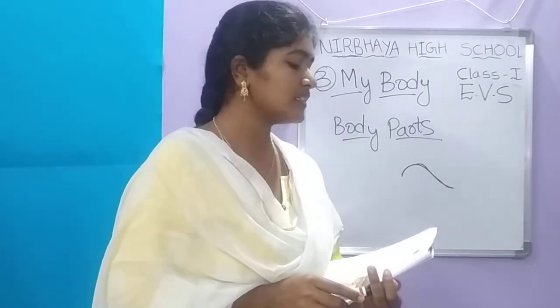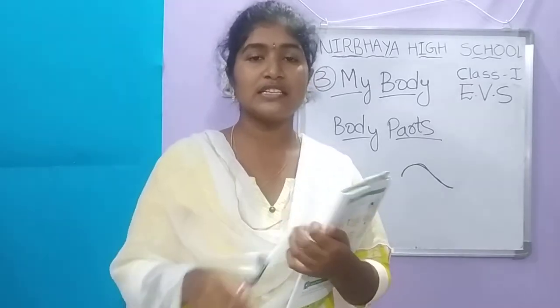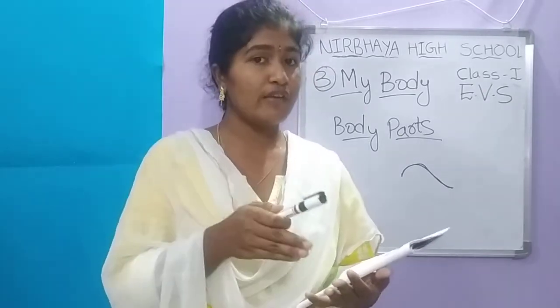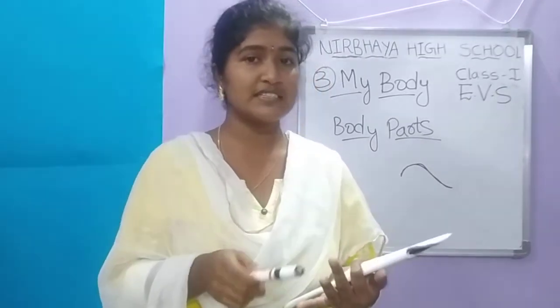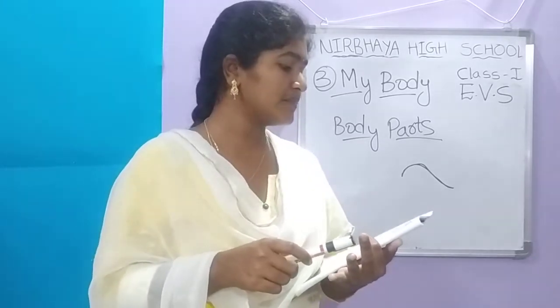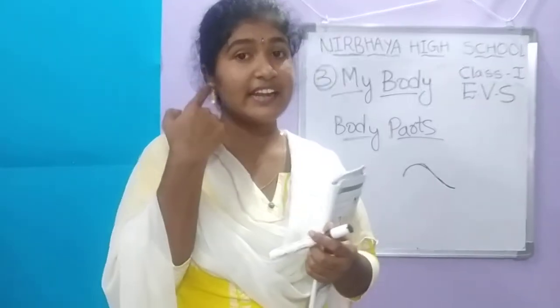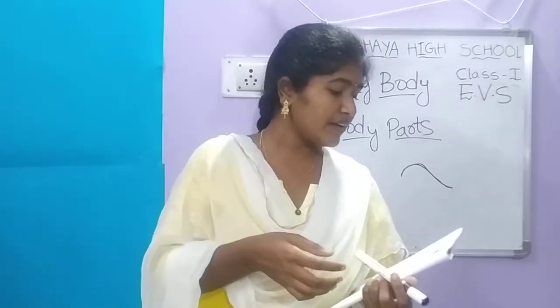We have different body parts — like head, trunk, and limbs. These are our main body parts. Animals' body parts are different, and our body parts are different. Some parts have the same names as animals, like eyes and ears, but they look different from us.